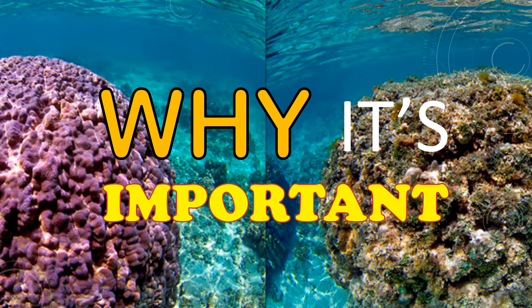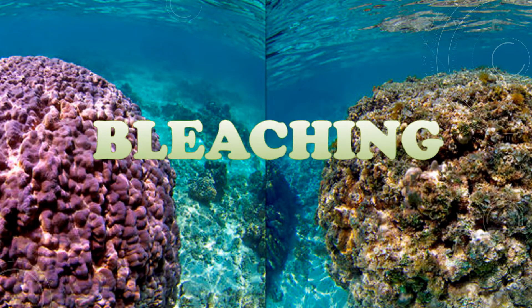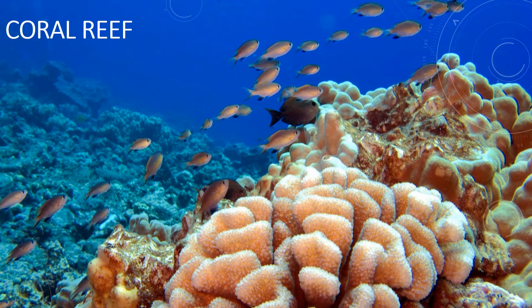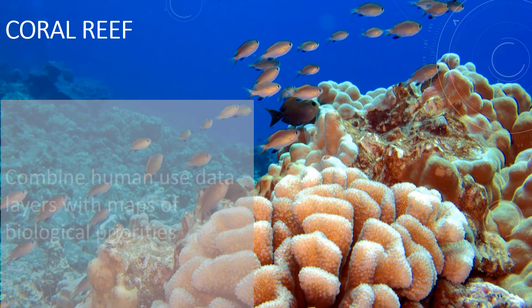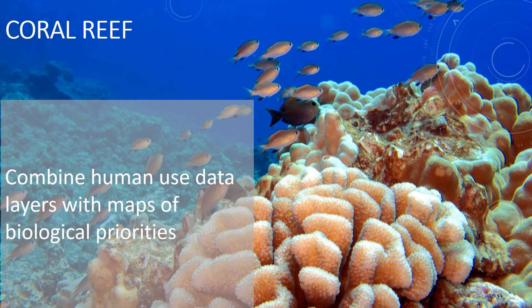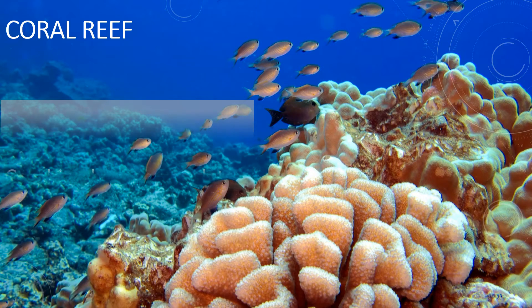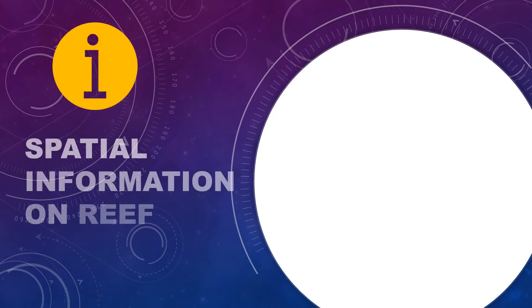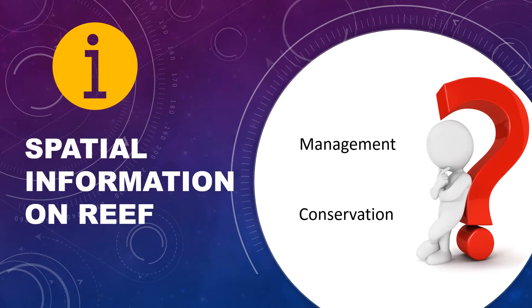Why is it important to preserve the protected marine area for coral reefs? Bleaching — this is what has happened to the marine reef in Hawaii. GIS can combine human-use data layers with maps of biological priorities and integrate information for decision-making. Participatory GIS incorporates people's special knowledge into digital maps for conservation planning, gathering geospatial data on human uses of the near-shore ocean environment close to marine protected areas. The ability of GIS to obtain spatial information on reef species is essential for management and conservation decisions.